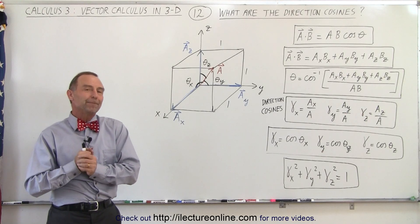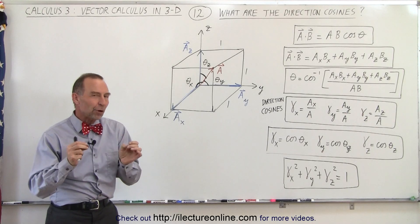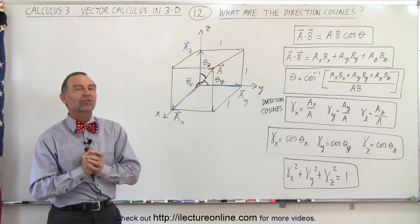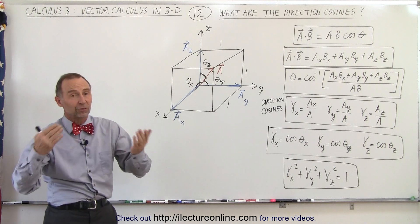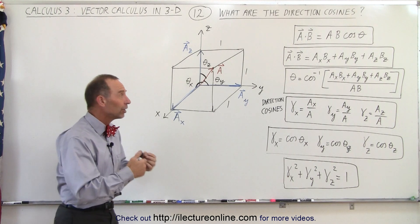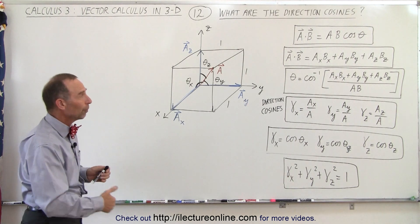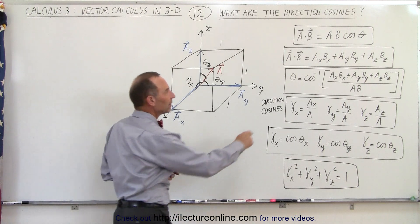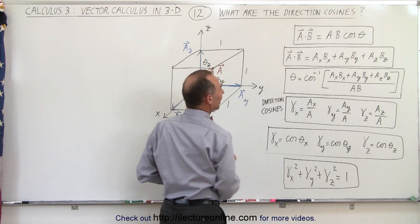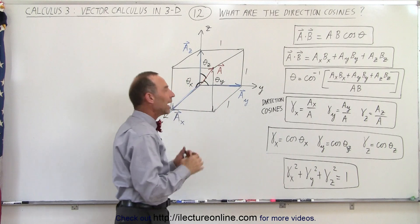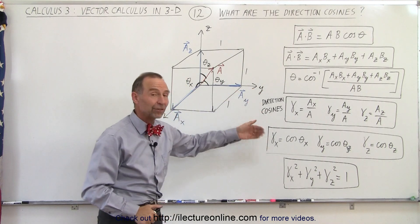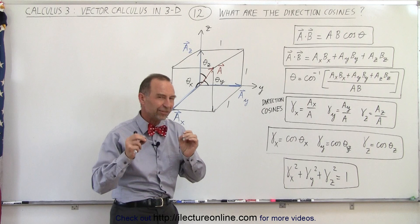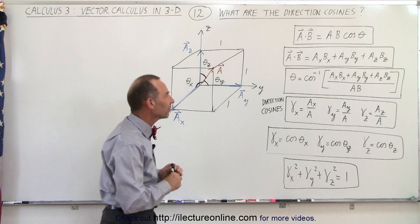Welcome to our lecture online. In this video we're going to define what the direction cosines are, and since we're talking about the dot product it's going to help us do so. We have the definitions of the dot product, the definition of the angle between any two vectors, and some additional boxes that define what the direction cosines are. Let's take it one step at a time.